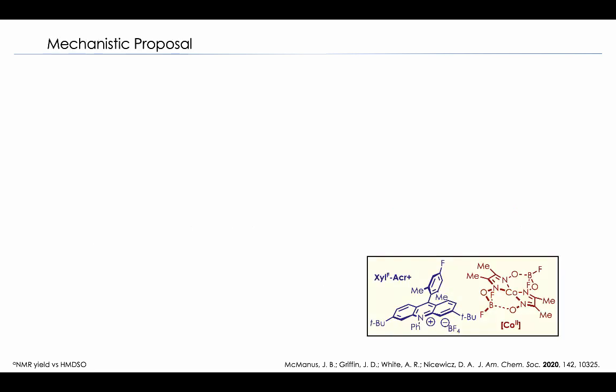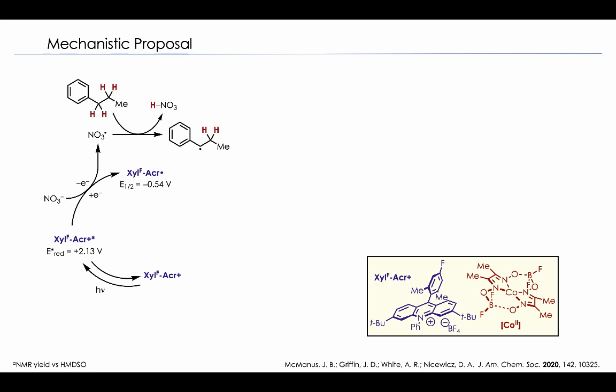And so the way we think this reaction proceeds is first through promotion of the ground state acridinium to its excited state using blue light irradiation. The excited state acridinium is then oxidizing enough to oxidize the nitrate anion to the nitrate radical. The nitrate radical then performs an H atom abstraction at the benzylic position of the aromatic substrate to then give a benzylic radical and an equivalent of nitric acid. The benzylic radical can then be intercepted by a cobalt-3 hydride to evolve hydrogen gas and give a styrene intermediate. The cobalt-2 species and the acridine radical can then engage in an electron transfer event where the ground state acridinium is formed and a cobalt-1 species is generated. The cobalt-1 species is then protonated from in-situ generated acid to give the cobalt-3 hydride, which then closes the cobalt catalytic cycle.